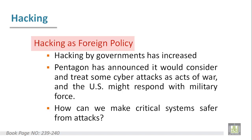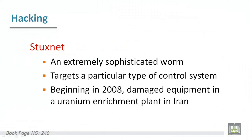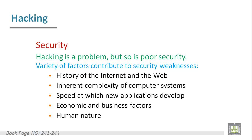For more details about government hacking, you can refer to the book. Stuxnet is a new terminology regarding hacking — it is an extremely sophisticated worm that targets a particular type of control system. It started in 2008 and damaged equipment in a uranium enrichment plant in Iran.